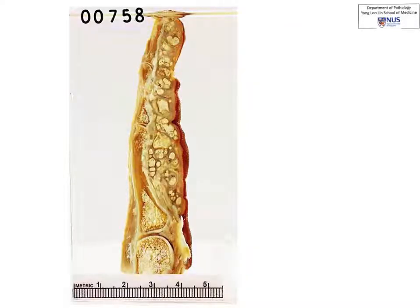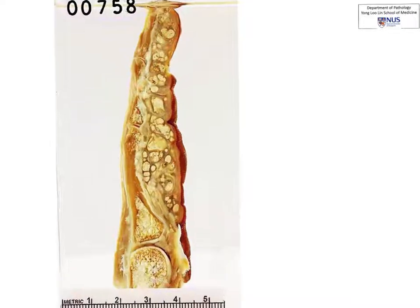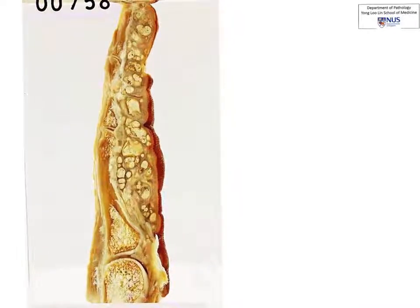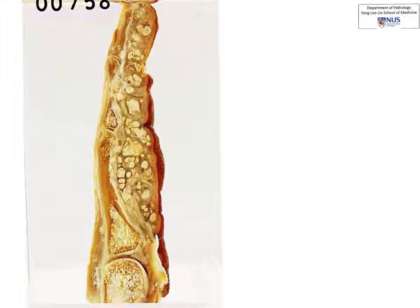Now let's take a closer look at what is actually happening. If you pay attention to the soft tissues, particularly here in the palmar aspect of the finger, you can see that there are lots of these irregular, well-defined, chalky, whitish deposits. And in fact, some of them are actually encroaching upon the bones of the phalanges, as you can see.